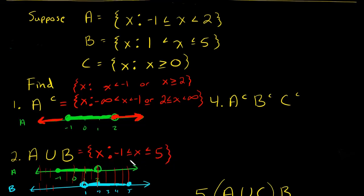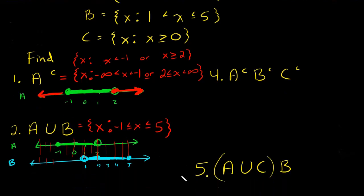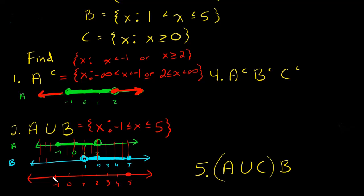So the union is all X such that X is between negative 1 and 5. On the number line you'd have a solid circle on negative 1 and a solid circle on 5. The union is all numbers between negative 1 and 5.